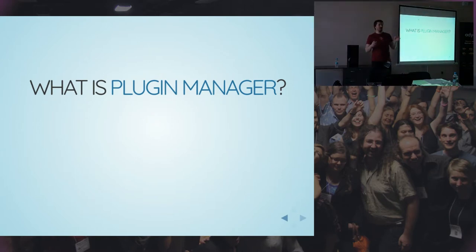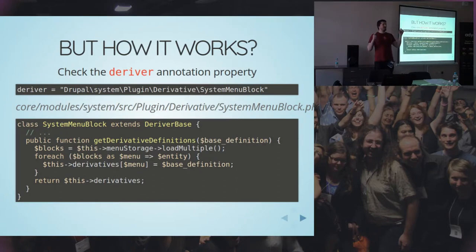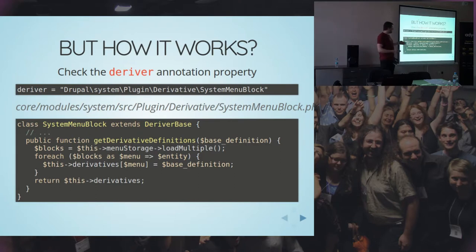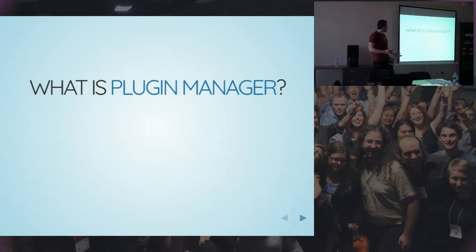Есть ли вопросы по деривативам? Большинство, кто смотрел доклад, считают эту тему сложной и непонятной. Но суть в том, что нужно просто один раз поработать. Вот пример для меню — мне кажется, идеальный: у нас много менюшек в базе, и один и тот же код плагина используется для каждой менюшки. Это, наверное, самый удобный пример для этого.